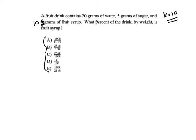A fruit drink contains 20 grams of water, 5 grams of sugar, and 10 grams of fruit syrup. What percent is fruit syrup? Well, if there are 10 grams of fruit syrup out of a total of 20 plus 5 plus 10, 35, that comes out to about, you can use your calculator for this, about 29%.